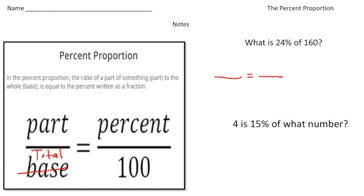So the question says what is 24% of 160? Well, the way you set your proportion is, 100 is always going to be on the bottom right-hand corner. That's set in stone—that's always going to be 100. And the percent always goes above the hundred, because that's what percent is, right? Out of 100.